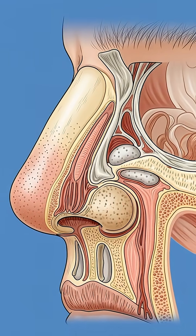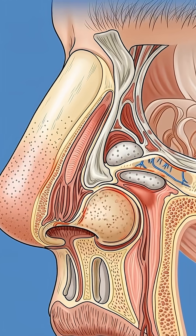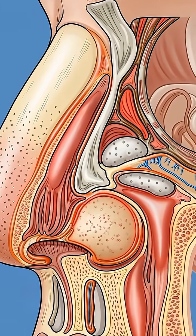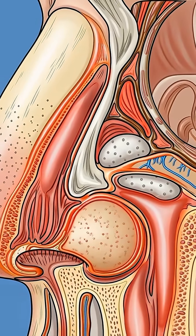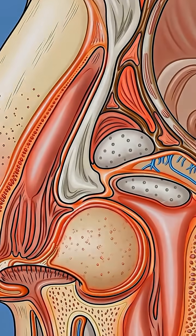The nose is made of bone, cartilage, and soft tissue. Understanding its anatomy is essential before performing rhinoplasty.